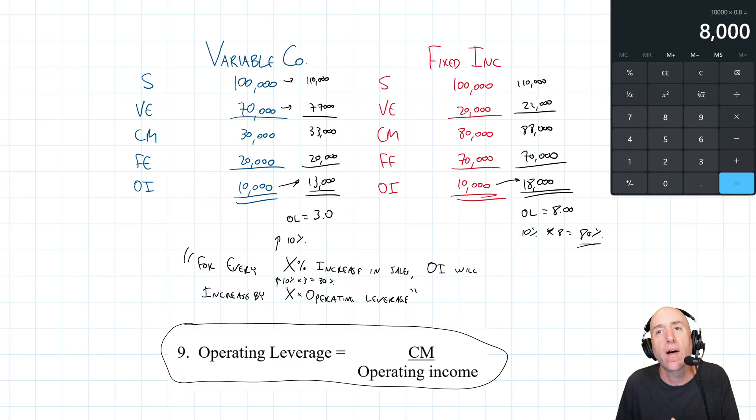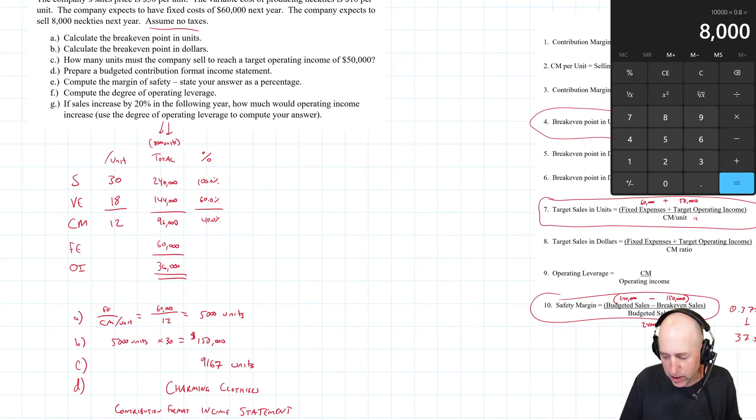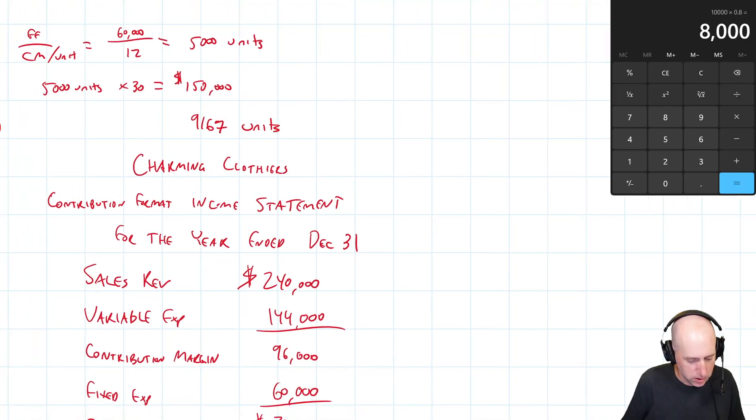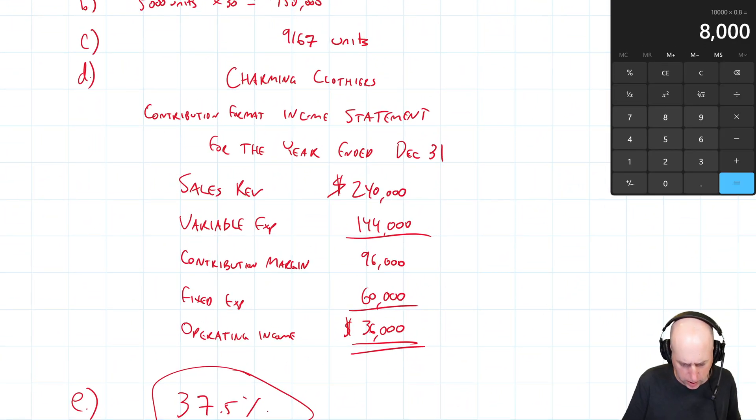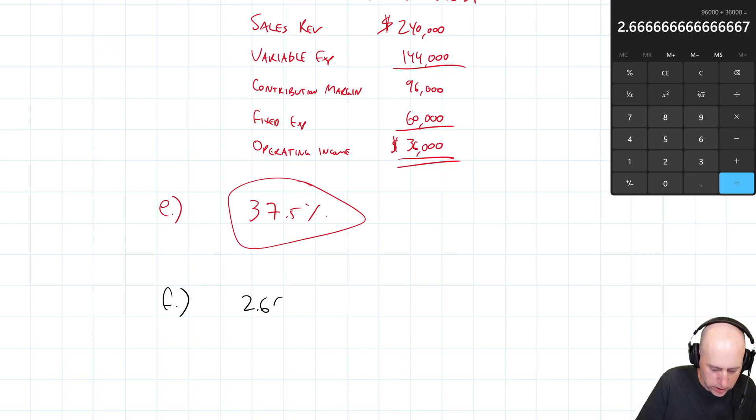So that's how operating leverage works. The higher the operating leverage factor, the more the profits will swing based on a change in sales. And there are companies with very low operating leverage factors, very high. And that speaks to their strategies or just operating styles. So let's return to our problem. Now we were working through Charming Clothiers and it says compute the degree of operating leverage, which is just that formula, the operating leverage factor there, CM divided by operating income. So what is our CM? 96,000. Our operating income is 36,000. So 96,000 divided by 36,000. Our operating leverage is 2.66666. So F, the answer is 2.6667.